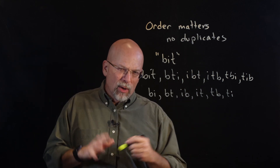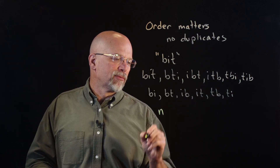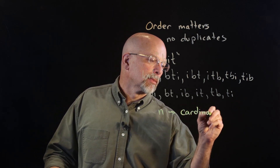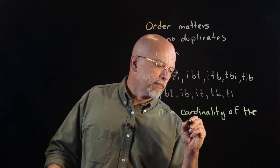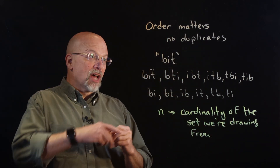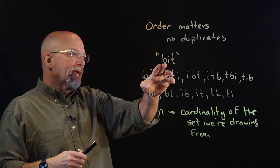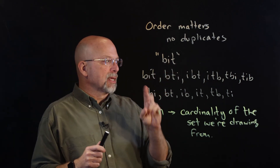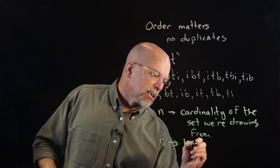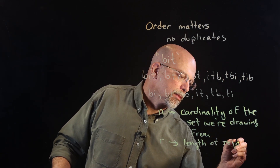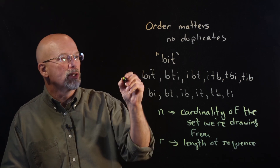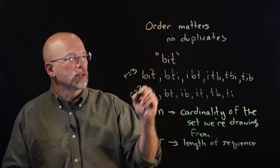Let me define a couple of variables. N is going to be the cardinality of the set we're drawing from — in our example, that's three (the letters B, I, and T). R is the length of the sequence. So for our first example, R equals three; for the two-letter example, R equals two.